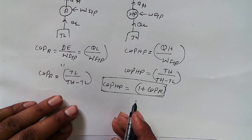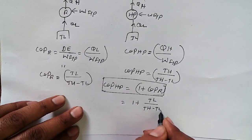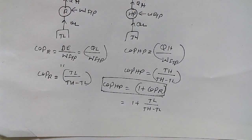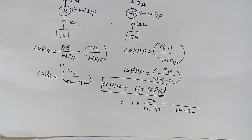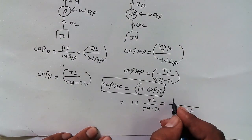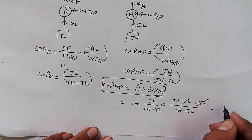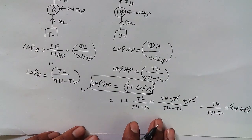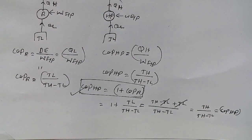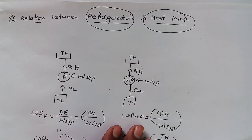COP of refrigerator is TL over TH minus TL. Taking TH minus TL as the common denominator, we get TH minus TL plus TL — the minus and plus cancel out — giving us TH over TH minus TL. This means COP of heat pump. So what we get from this equation is that COP of heat pump is equal to 1 plus COP of refrigerator. Hence proved.